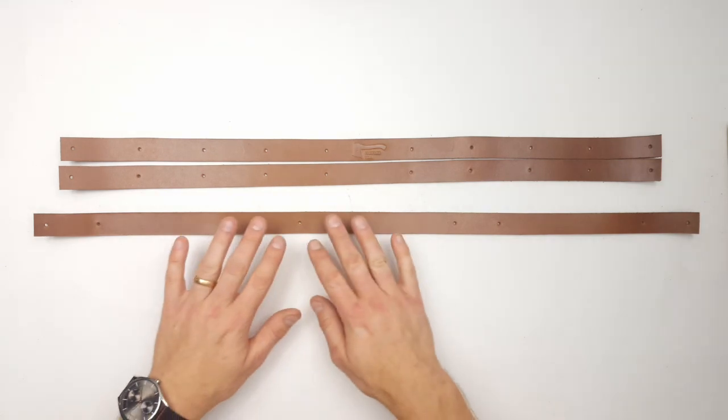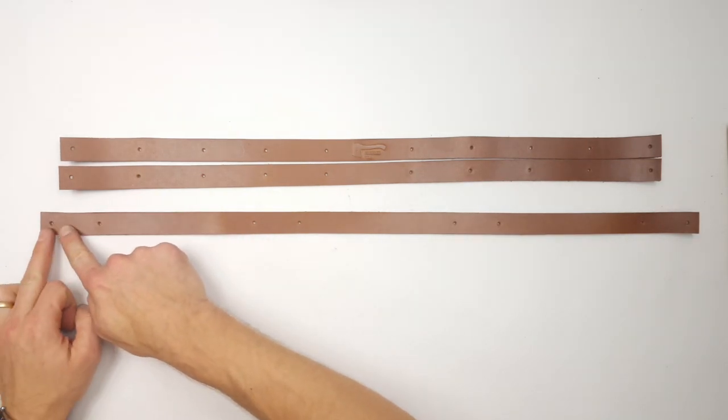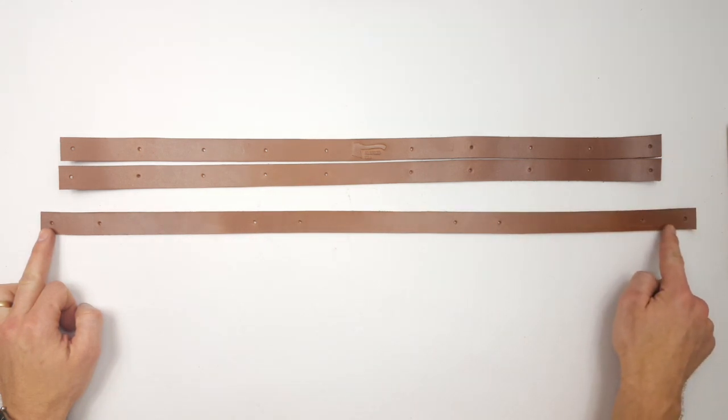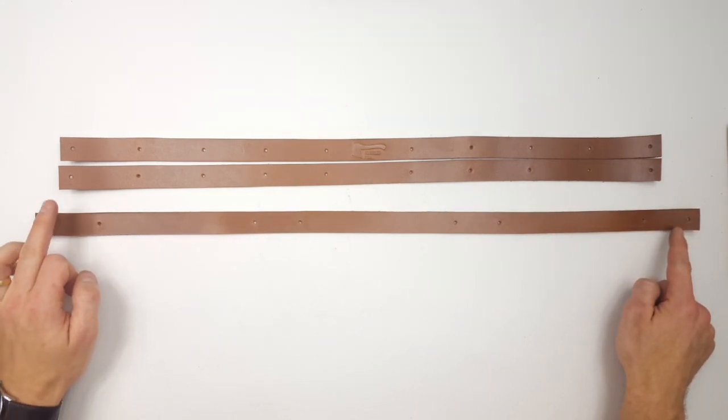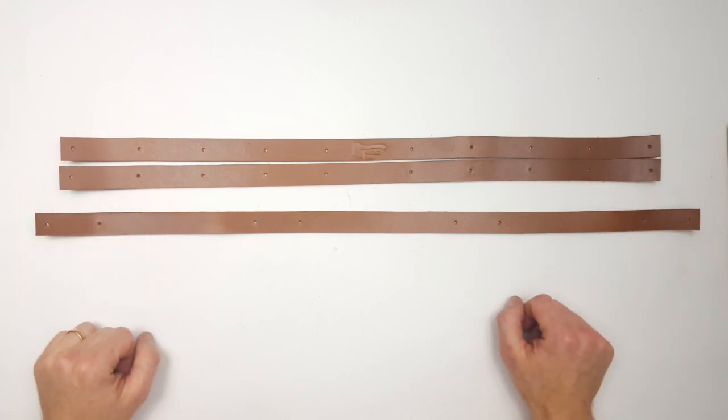Now when we have it laid out like this, we need to add the rivets. We need to add one rivet for every single hole on this long strap down here, and we need to add rivets to the end holes of these shorter ones.